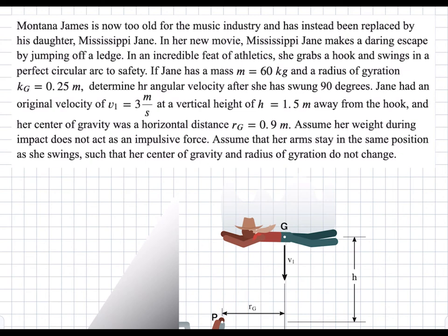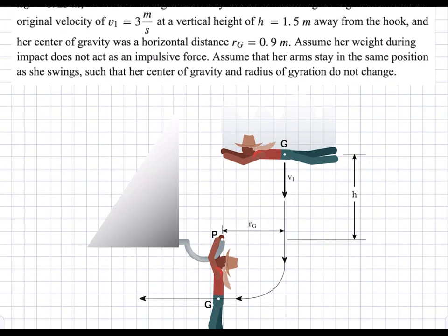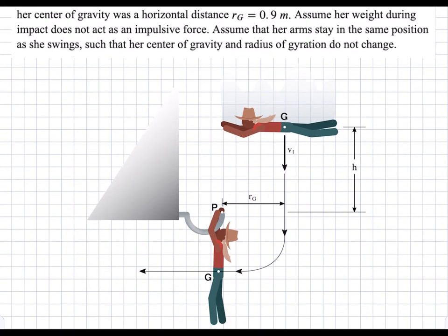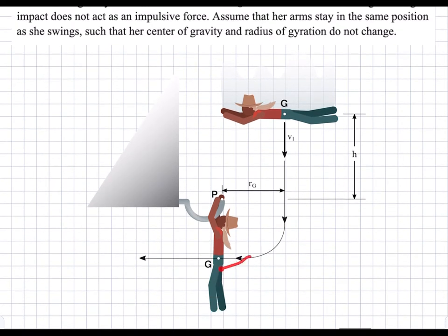In this problem, a person is flying down vertically, and then after a height h, they attach to a hook and start to purely rotate about point P. We are asked to find what the angular velocity of this person is after 90 degrees of rotation.